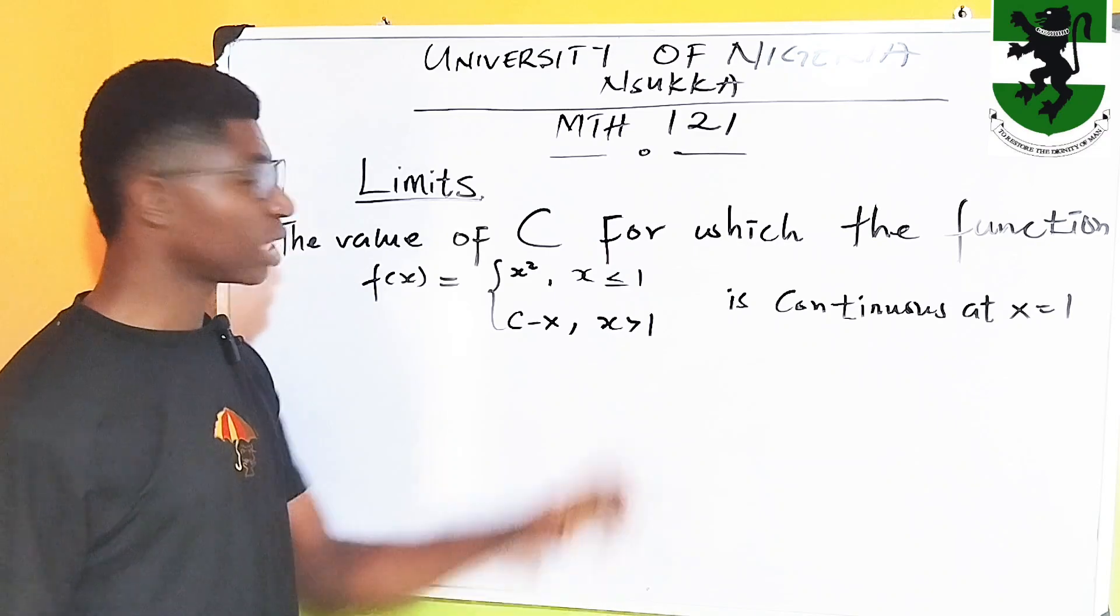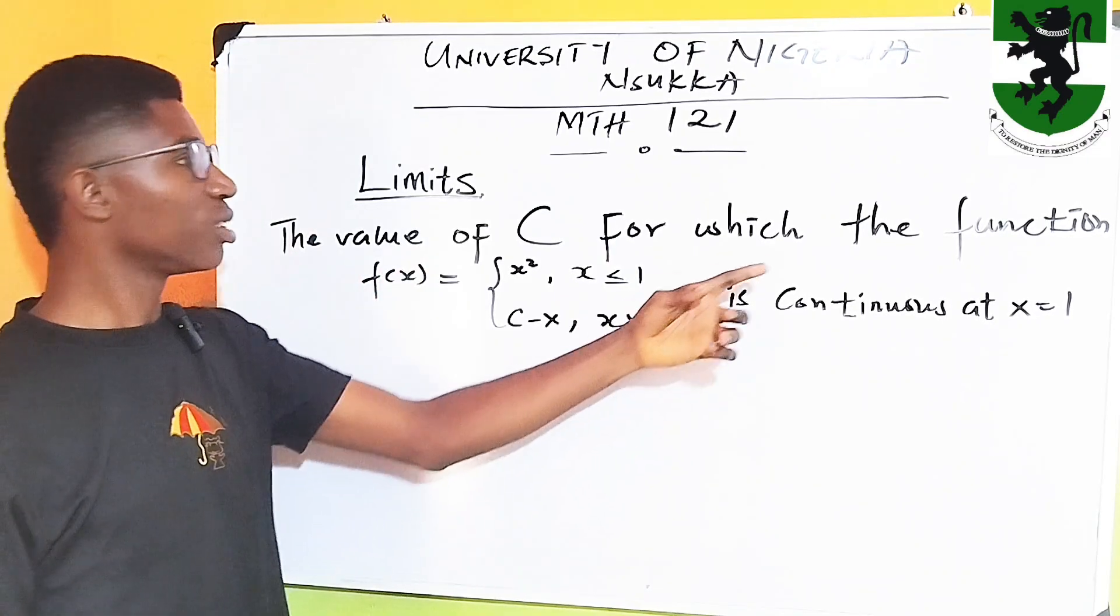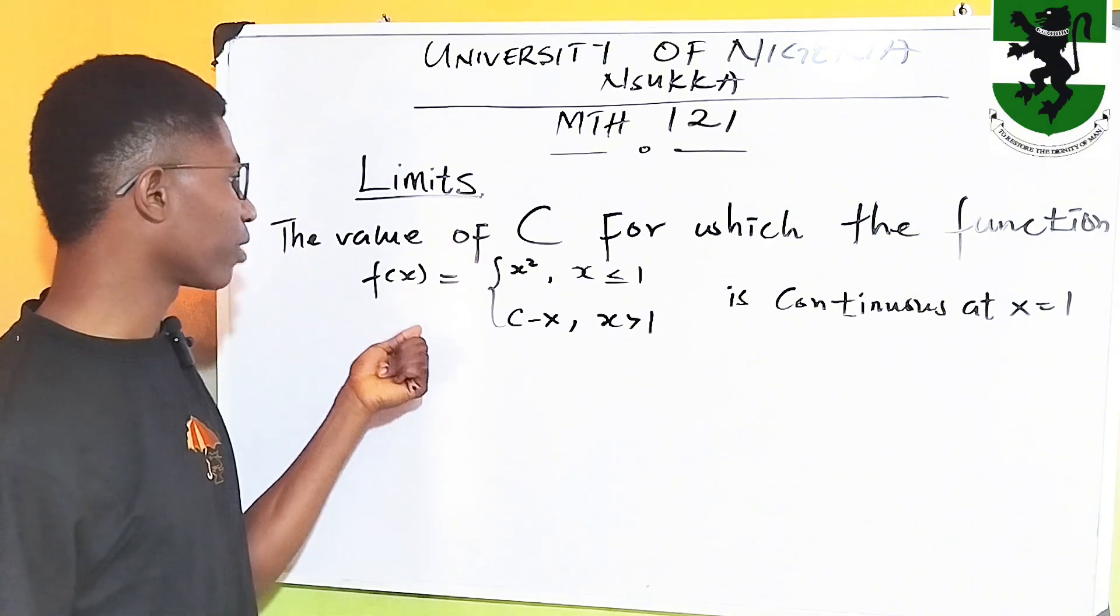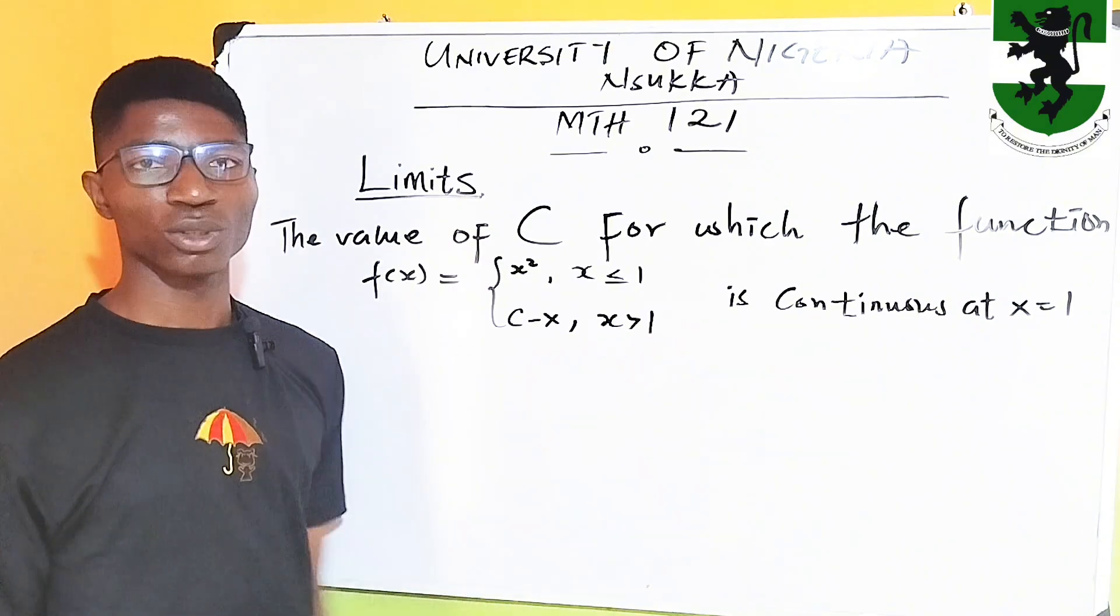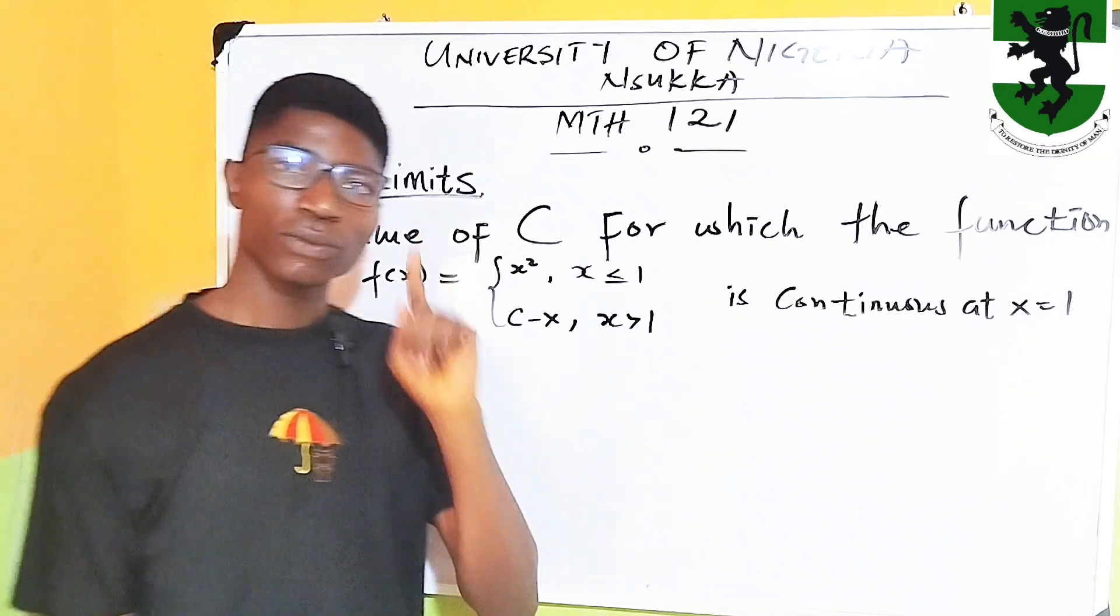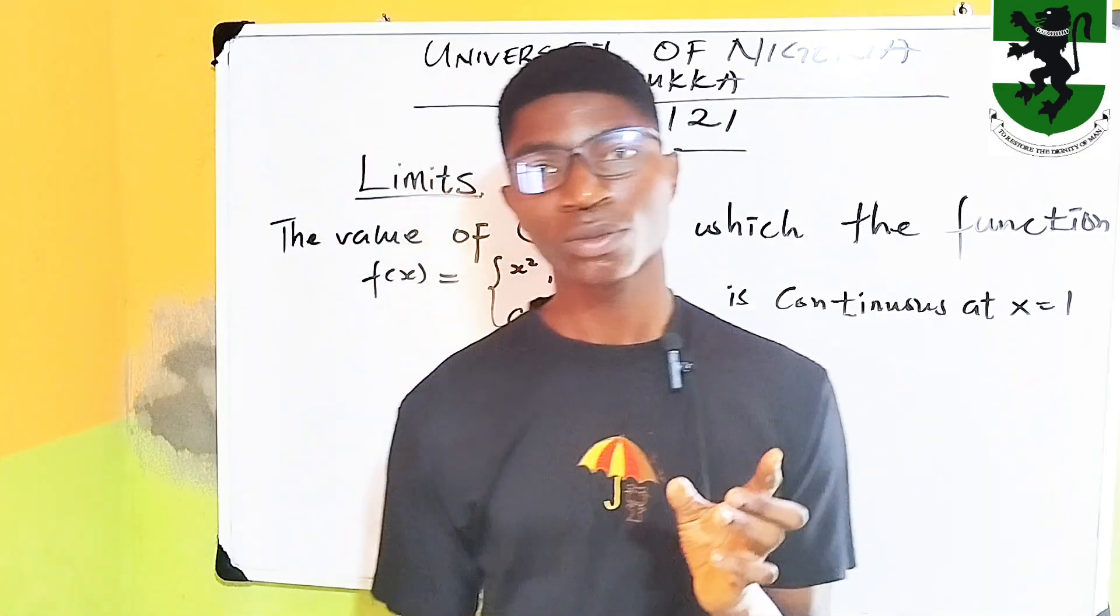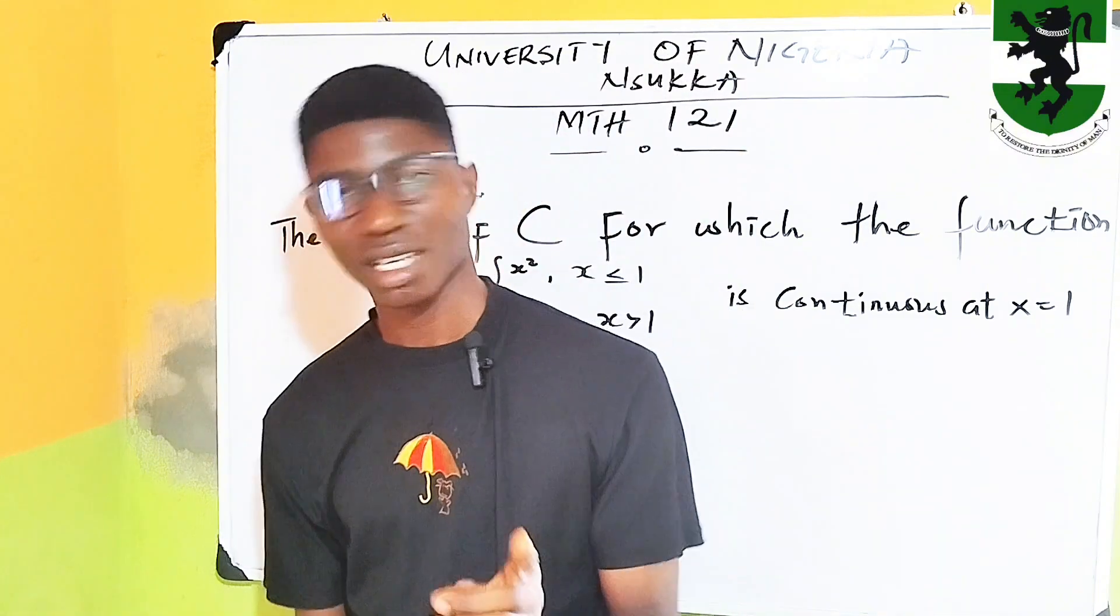Now, say this question, very simple. What is the value of c for which the function f of x is continuous at x is equal to 1? Recall that a function is said to be continuous at a point if the left-hand limit and the right-hand limit exist and are equal.